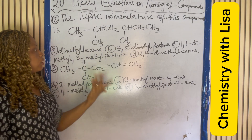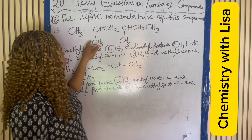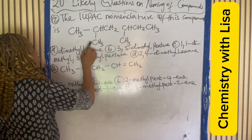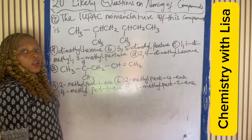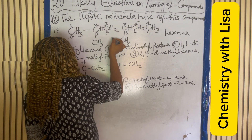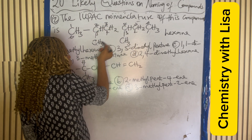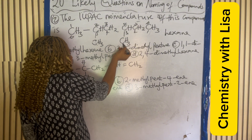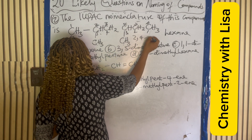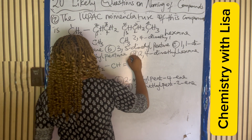For the IUPAC nomenclature of the next compound, counting the longest continuous carbon chain: one, two, three, four, five, six — six carbons gives 'hex,' from the alkane family: hexane. The substituents at positions two and four are methyl groups, giving 2,4-dimethylhexane. The answer is D.